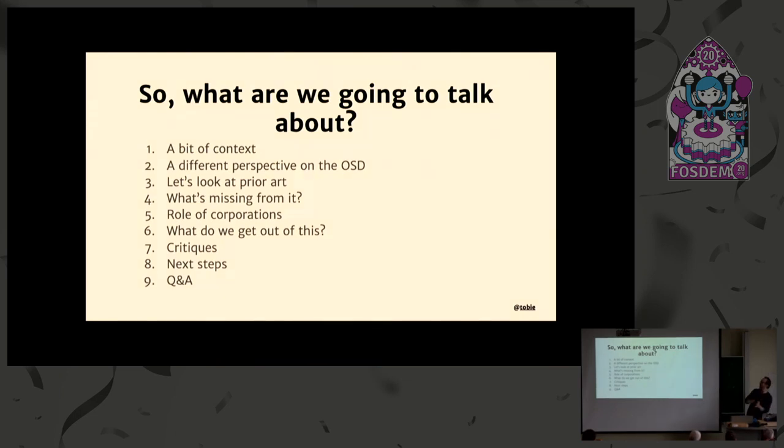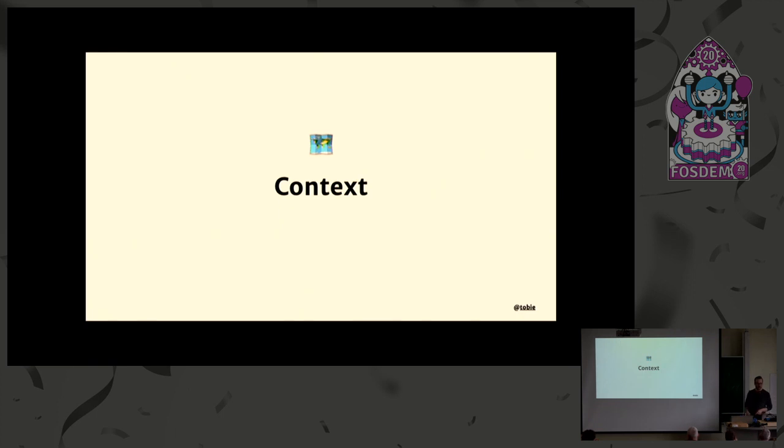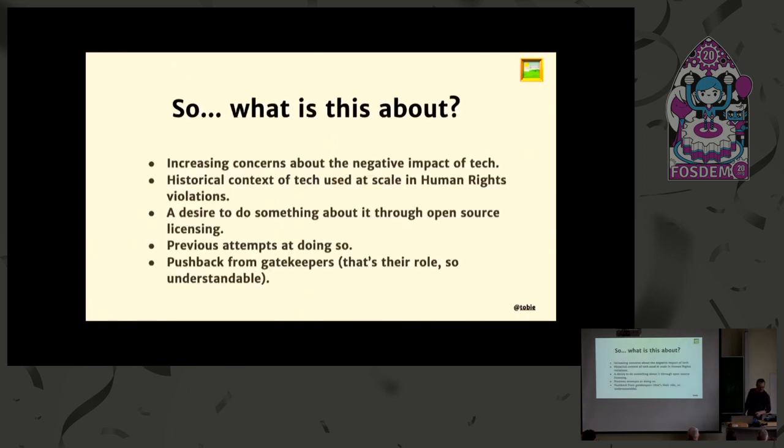So what are we going to talk about in a very short amount of time? First, a bit of context. I'm going to try to give a different perspective on the open source definition. We're going to look very quickly at prior art and what's missing from it. We're going to look at the role of corporations in this whole story and what we expect to get out of this ethical licensing, look at critiques and next steps, and we'll probably answer questions in the corridor.